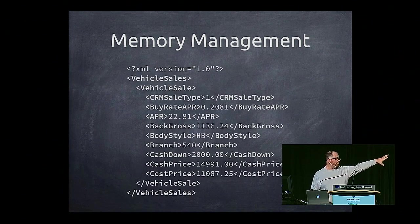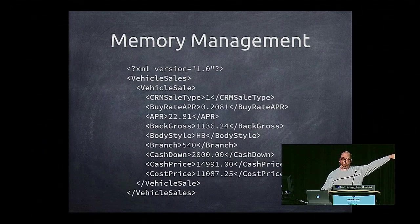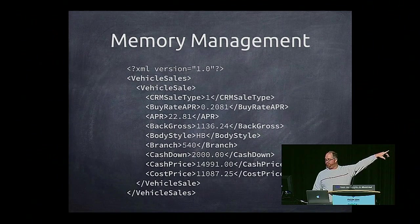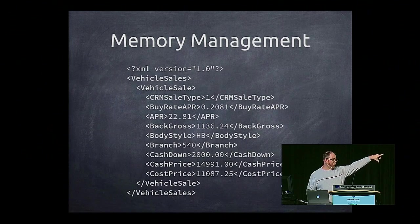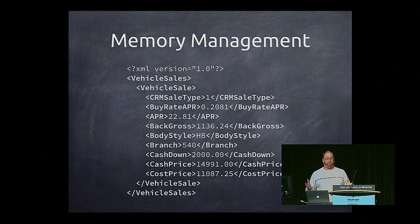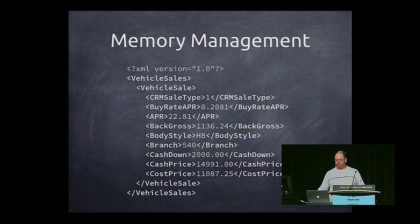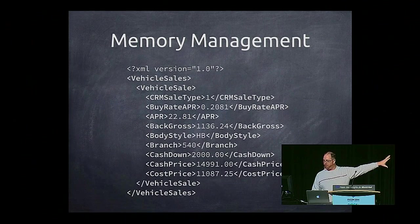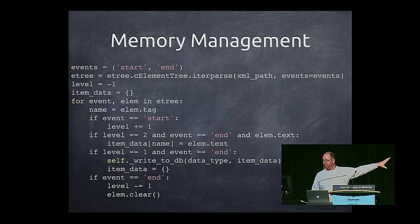Here's an example of an XML document I get. VehicleSale has a root, then VehicleSales, and then VehicleSales says this is one sale, and they do a key-value pair. Yes, it looks just like CSV — it's ten times more verbose than a CSV would be, but I have to deal with the data I'm given. Once I know the structure, I can parse over that iteratively.